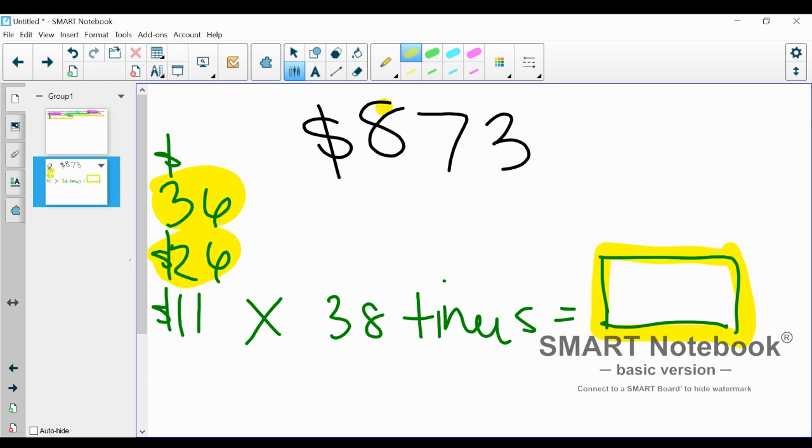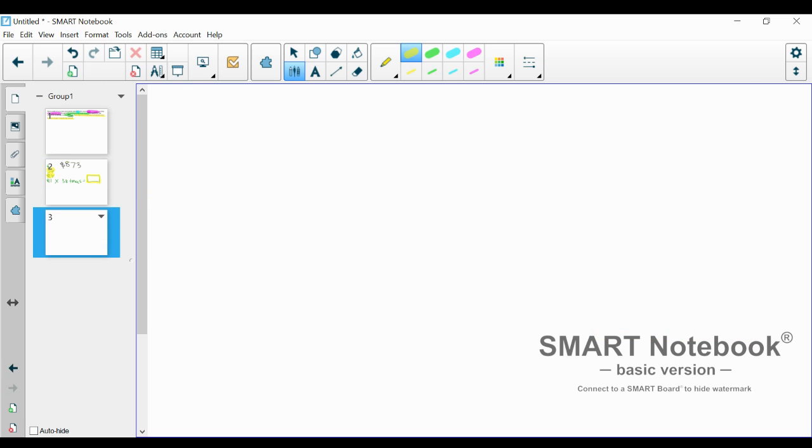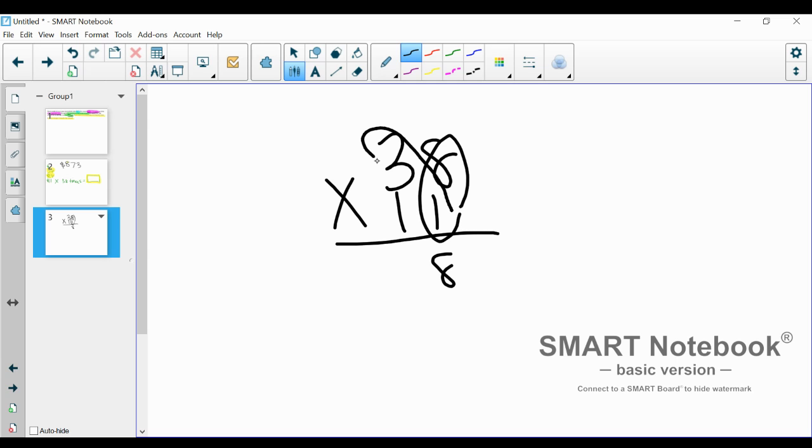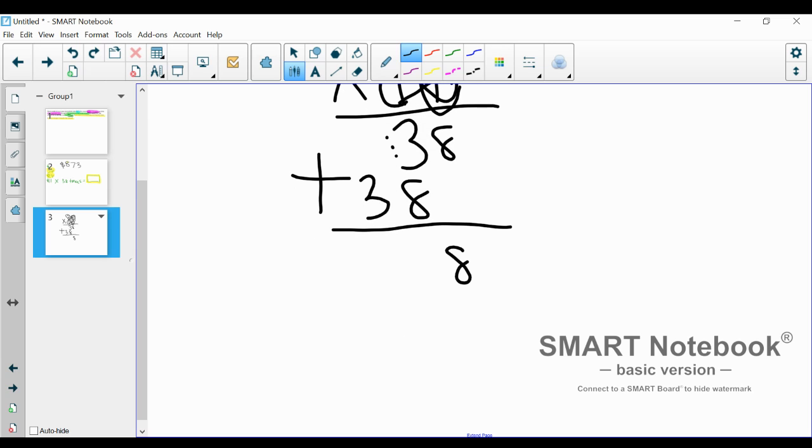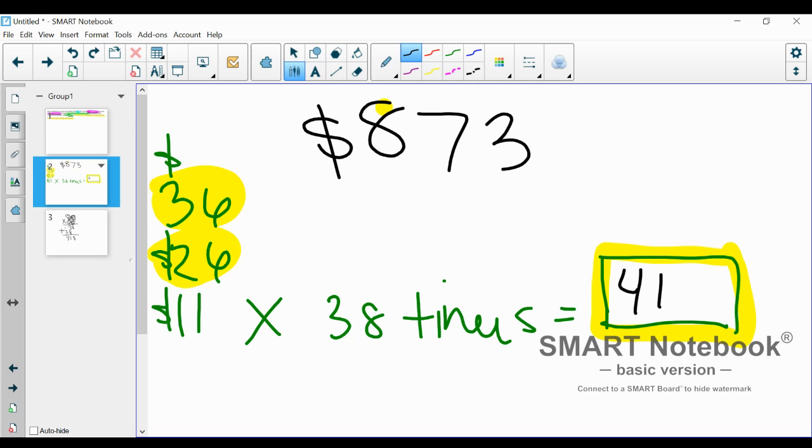So first, let's do 38 times 11. Standard algorithm here. 8 times 1 is 8. 1 times 3 is 3. 1 times 8 is 1, or 8, I'm sorry. And 1 times 3 is 3. So we're going to add all this up together. And we have 8, 9, 10, 11. And 3, 4. So, so far, he has this money.